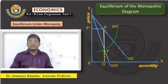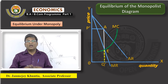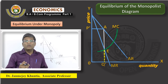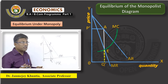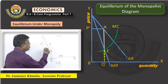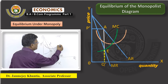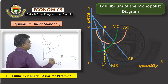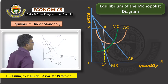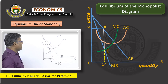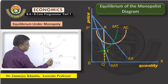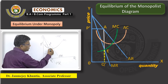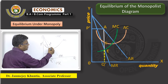In order to determine the level of profit earned by the monopolist, we have to draw the Average Cost Curve. As the Average Cost Curve is U-shaped, draw it accordingly. The Average Cost for this equilibrium level of output Q* is determined at Point B on the Average Cost Curve.